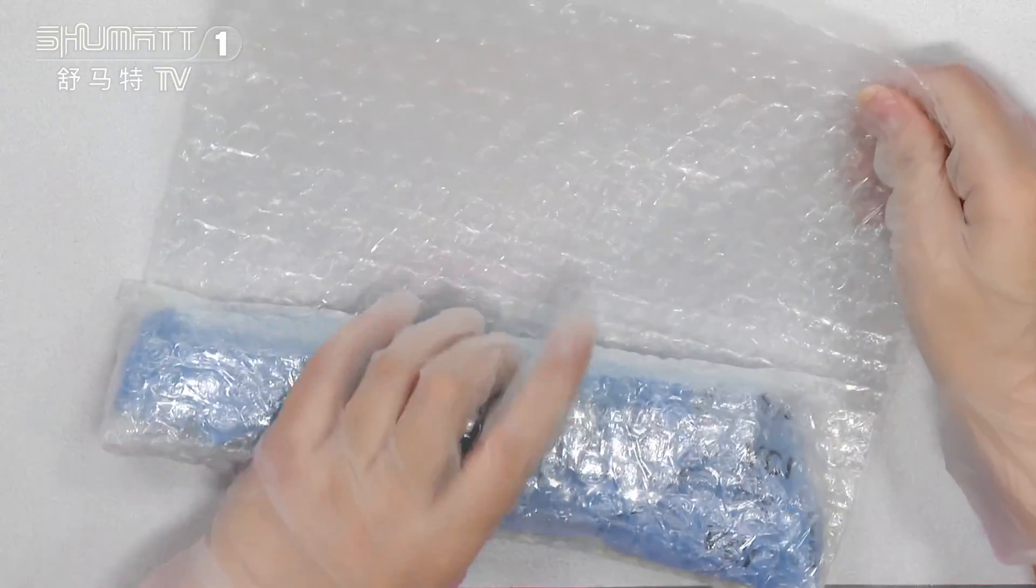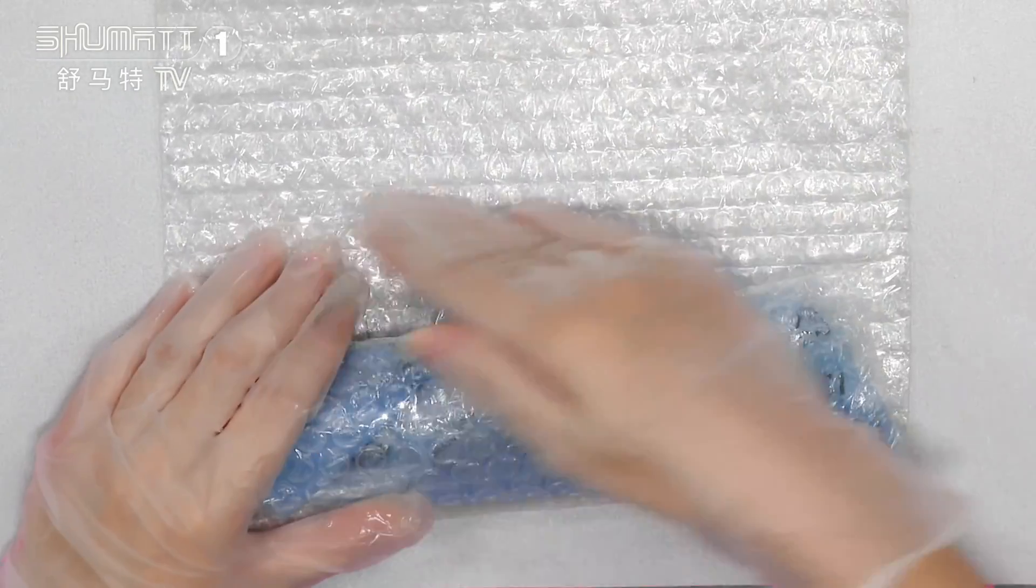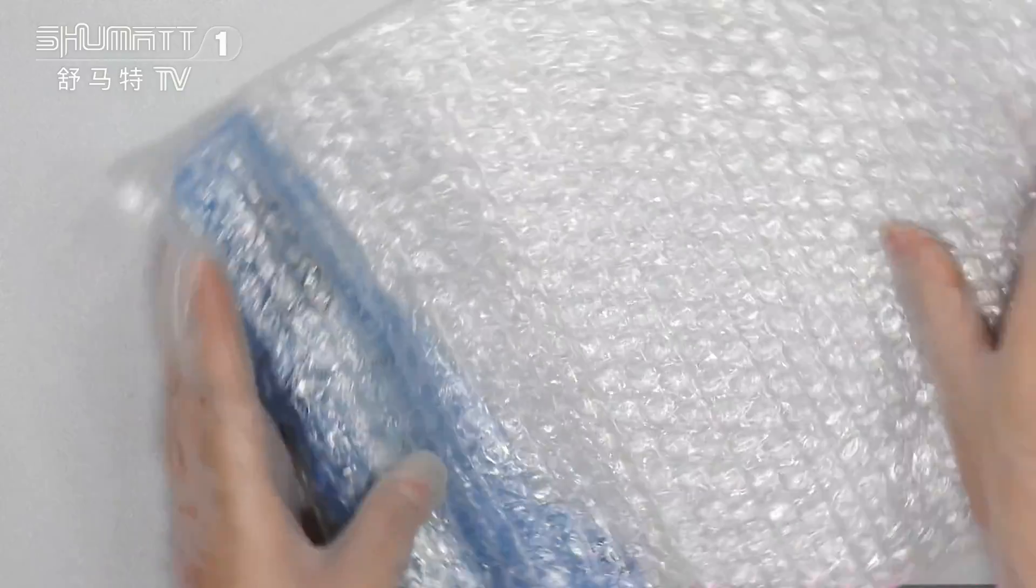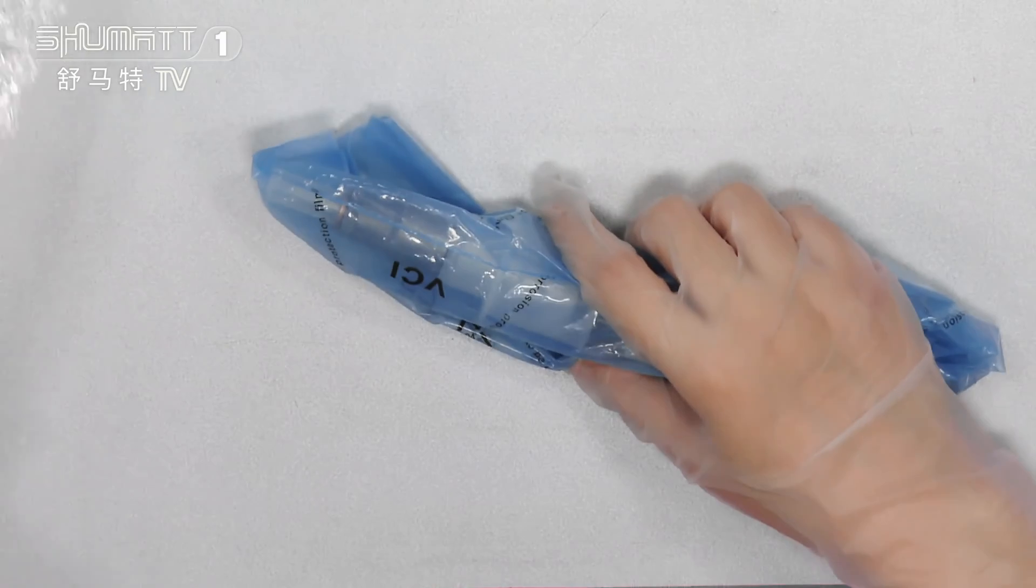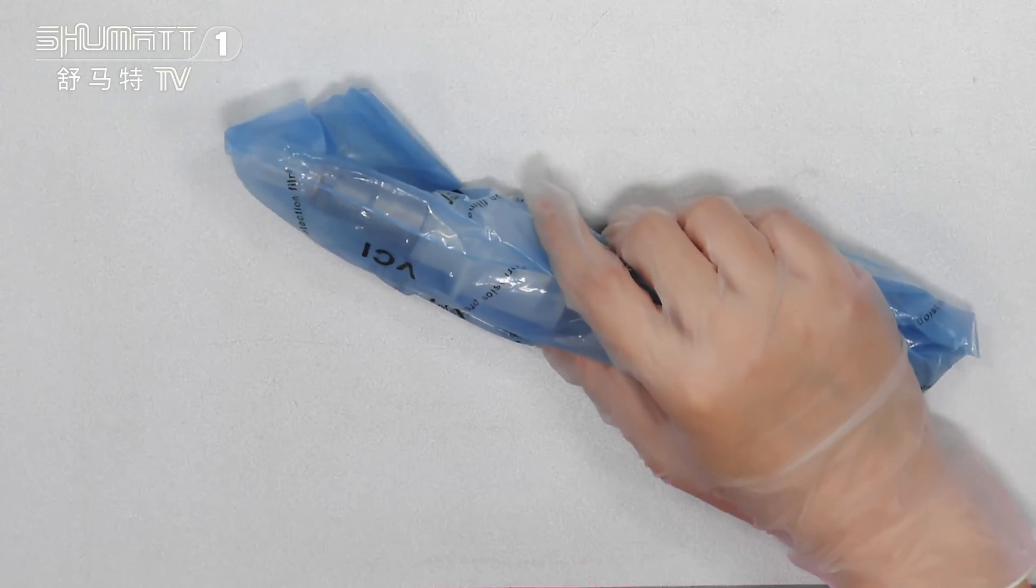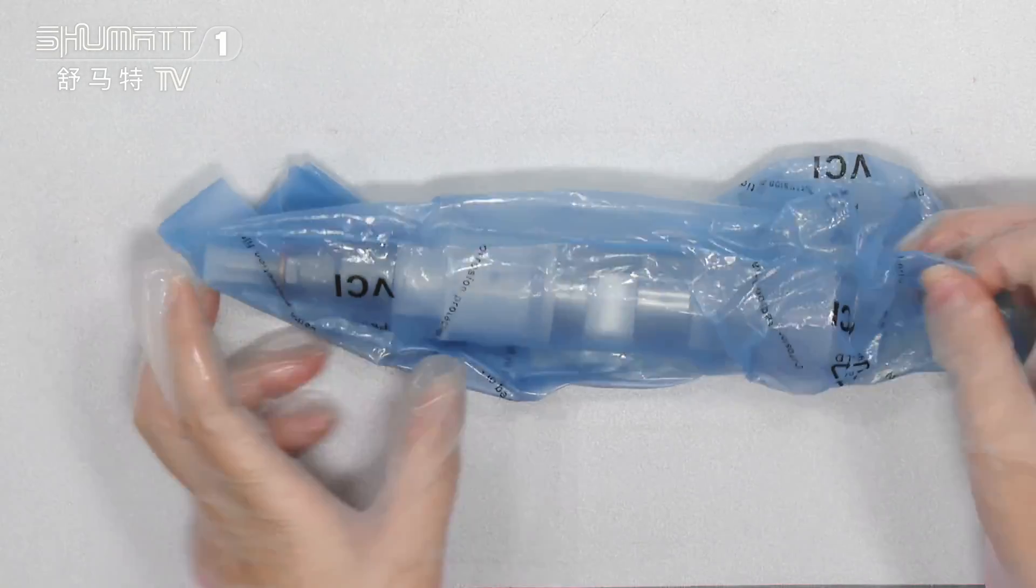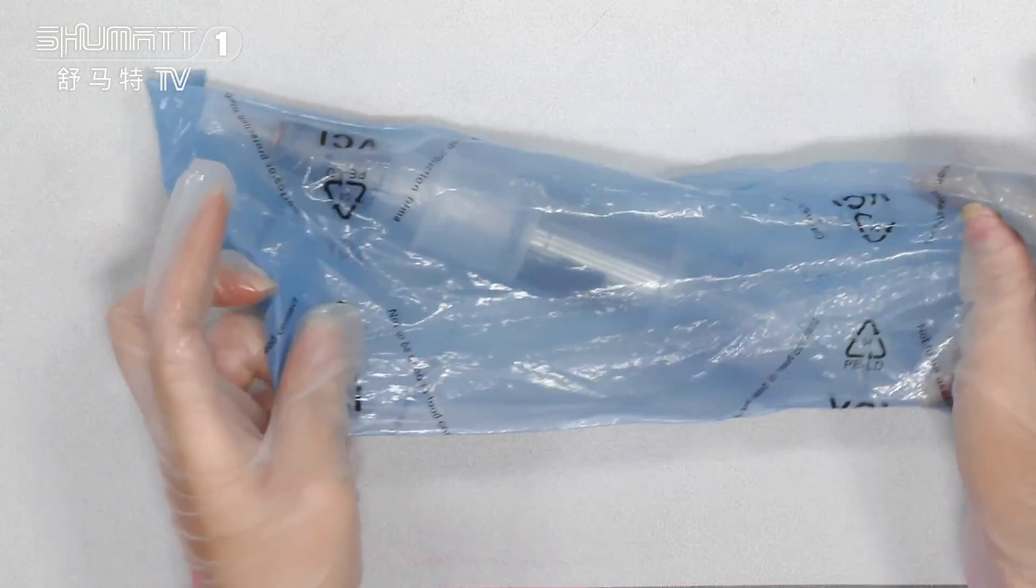And this part, we have two layers, the first layer and the second layer. The second layer, this one is a VCI anti-rust bag.